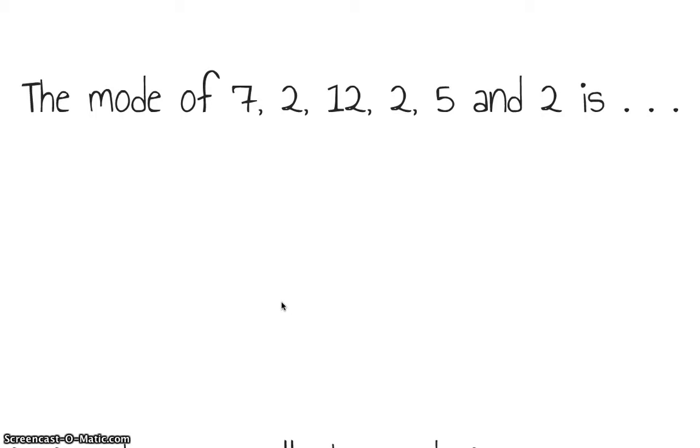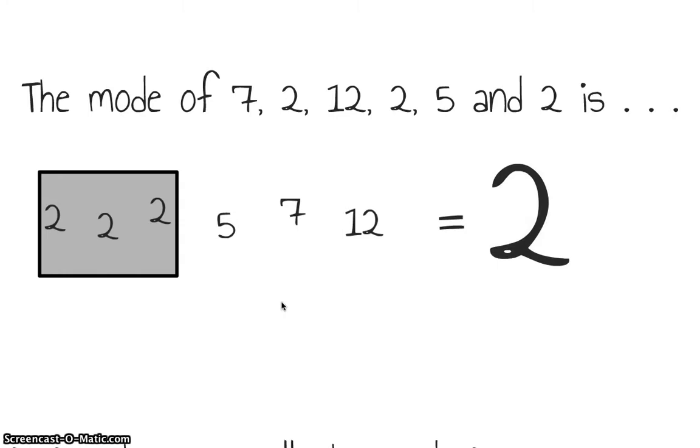So for our data set 7, 2, 12, 2, 5, 2, put them in order again because that helps us to see the groups. And then we can see very quickly that the 2's are the only repeated values, so they're the most frequently occurring value. And so that would give us a modal value for this data set of 2.